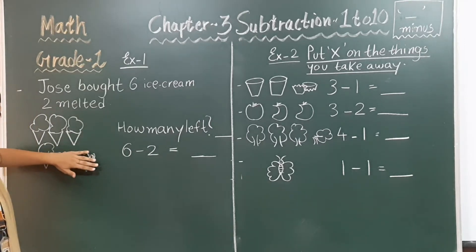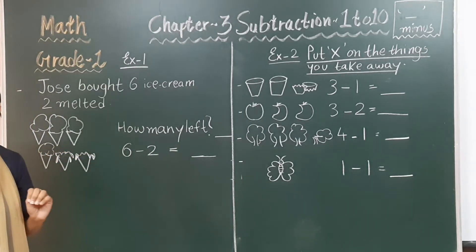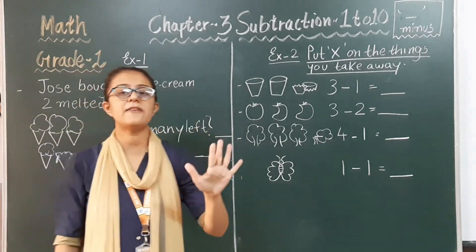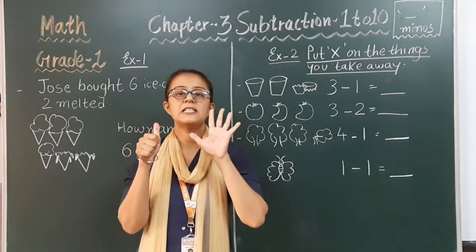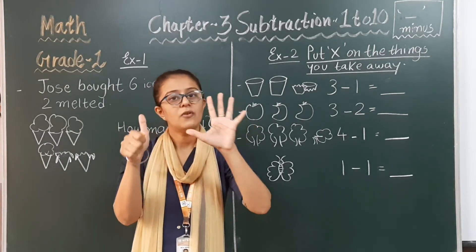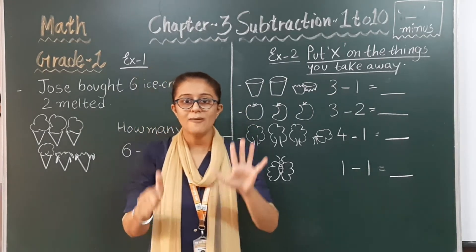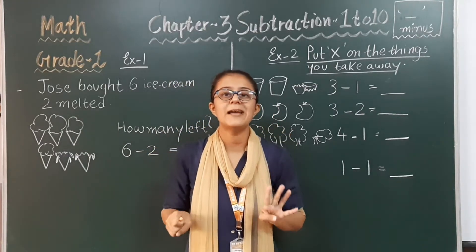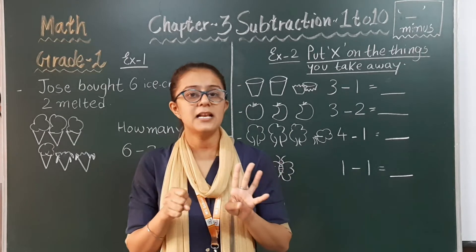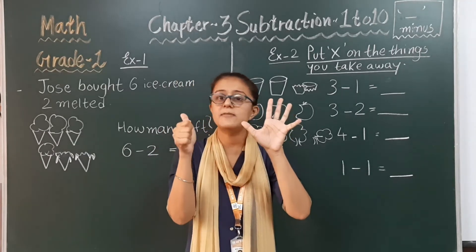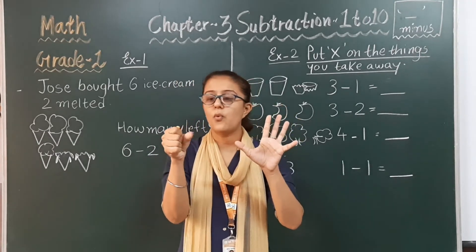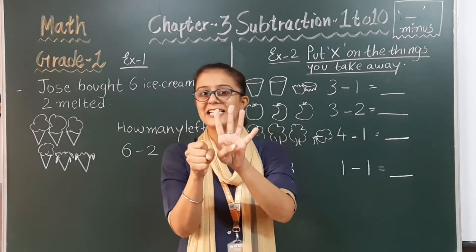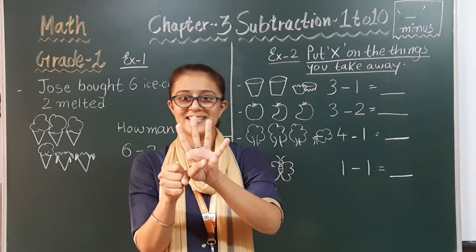Now, how many ice creams are left? Well, from these six ice creams, we have to remove those two ice creams. One and two. So, now how many ice creams do we have?